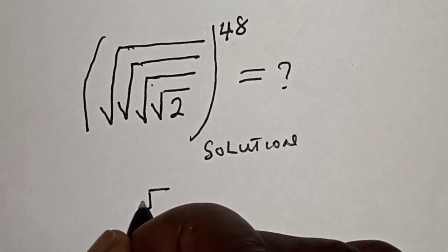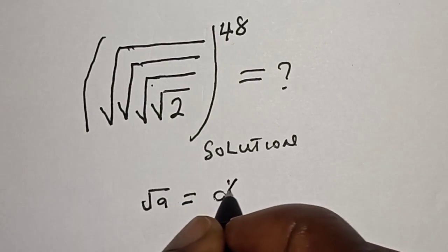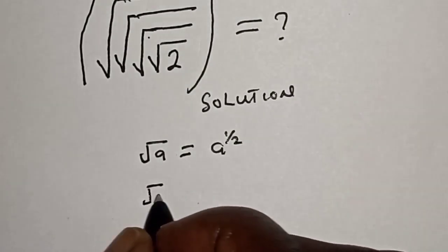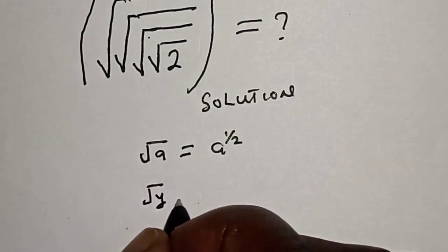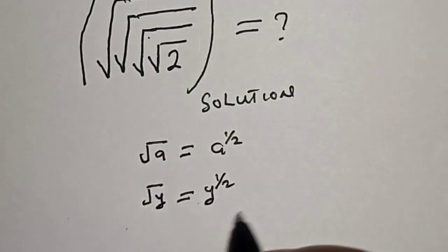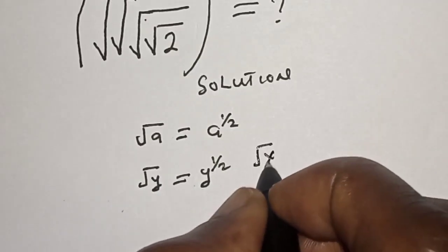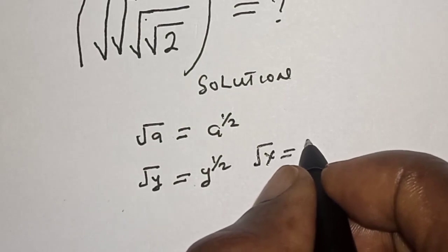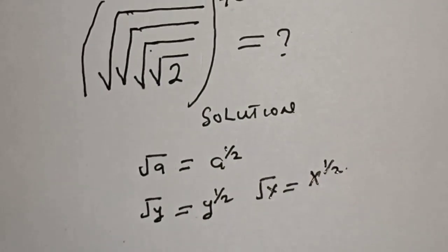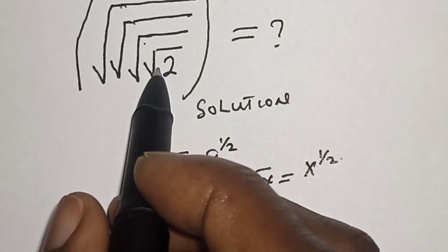Remember that if you have root a, this is equal to a raised to the power 1 over 2. Similarly, root y equals y raised to the power 1 over 2, and root x equals x raised to the power 1 over 2. Now, let's look at our expression: this is root 2 with another root.